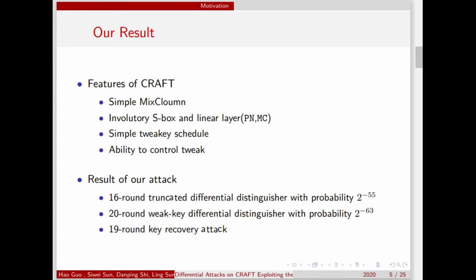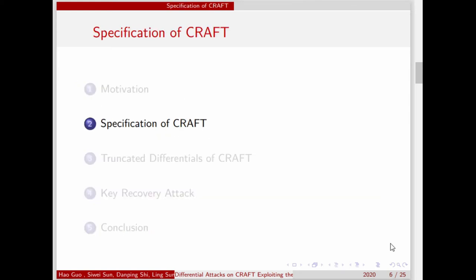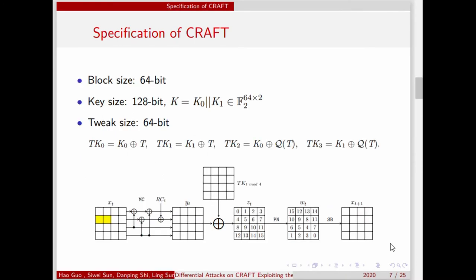We noticed that the number of rounds of CRAFT is 32, so our result is far from threatening the security of the full CRAFT. Now we introduce CRAFT. CRAFT is a lightweight tweakable block cipher proposed at FSE in 2019. The block size of CRAFT is 64 bits, and the key size is 128 bits. The master key is divided into two 64-bit parts, K0 and K1. The tweak size is 64 bits. The tweak is public and can be controlled by the attacker.